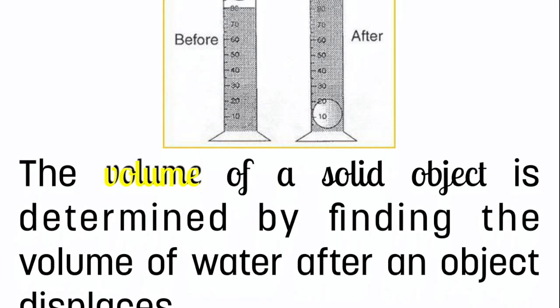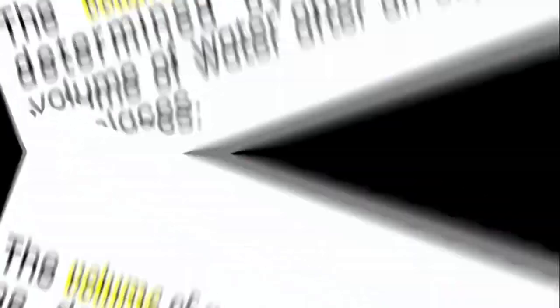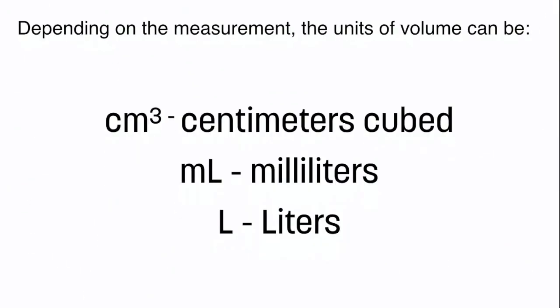The water that's displaced, that's pushed out or pushed up, the difference before and after is the volume of that object. That's just one way. Another way to measure volume of a solid object is by using length, width, and height. If you multiply those three quantities, you get the three-dimensional space that an object takes up.